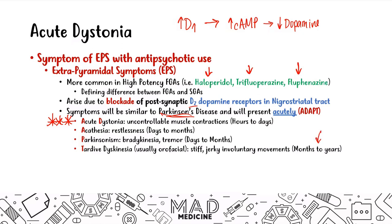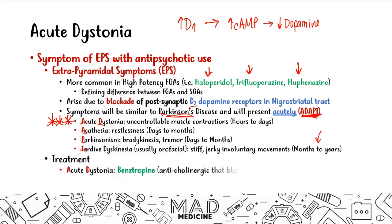Tardive dyskinesia is often not treatable. Acute dystonia is the main psychiatric emergency. We have a cool acronym for you — ADAPT, A-D-A-P-T — to help you remember the symptoms. When it comes to treatment, you can use a drug called benztropine. This is an anticholinergic agent that blocks M1 receptors, and it's going to improve the acute dystonia. Benztropine is the drug of choice, and you can also use it to treat akathisia and drug-induced Parkinsonism.